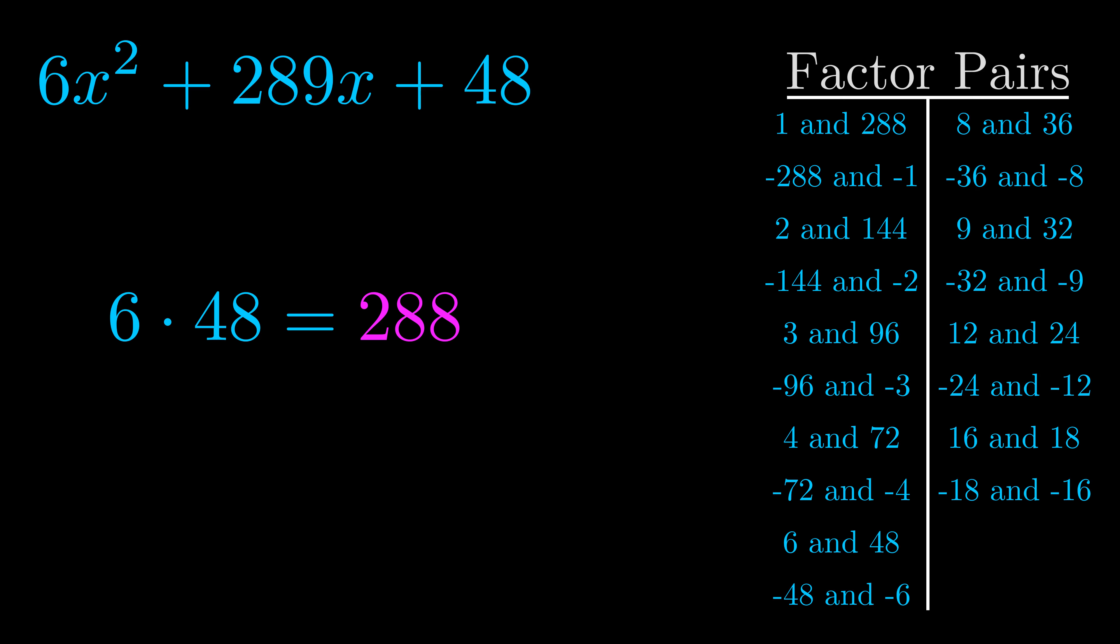The b value is the coefficient on the x term. That's the middle term, the one that we haven't done anything with yet. And really this is the only factor pair that we need.